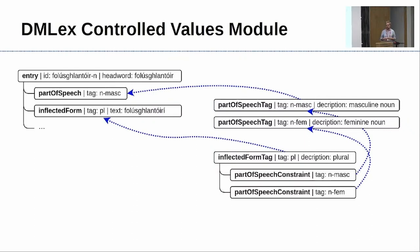Constraints between sets of tags can also be described — for example, specifying that certain inflectional tags can only apply to entries labeled with certain parts of speech, such as only nouns having plurals but not verbs. DMLex does not define any controlled values itself; it provides the mechanics for defining your own for your own projects, and includes types for linking tags to external inventories and ontologies.